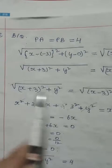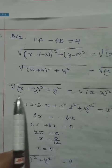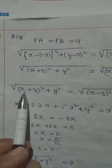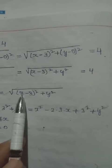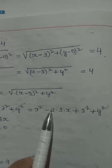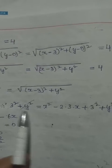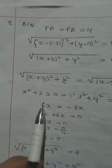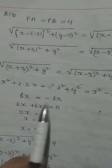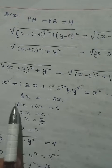Taking PA equal to PB first, and leaving the equal to 4 for later. Expanding: x plus 3 whole square gives x squared plus 2 times 3 times x plus 9, plus y squared. Expanding x minus 3 whole square gives x squared minus 2 times 3 times x plus 9, plus y squared. Comparing both sides: x squared, 9, and y squared all cancel. We are left with plus 6x on the left and minus 6x on the right, giving 6x plus 6x equals 12x equals 0, so x equals 0.